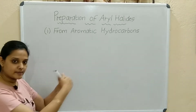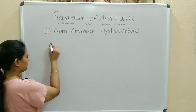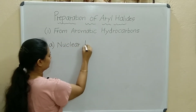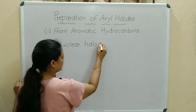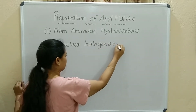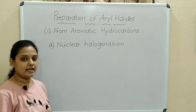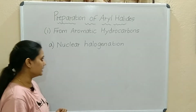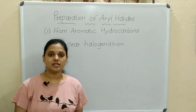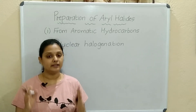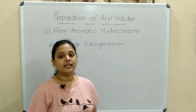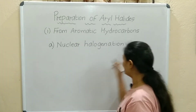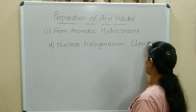There are two types further. The first type is nuclear halogenation — that means one halogen will be attached to the benzene ring. Nuclear halogenation occurs in the presence of Lewis acids.